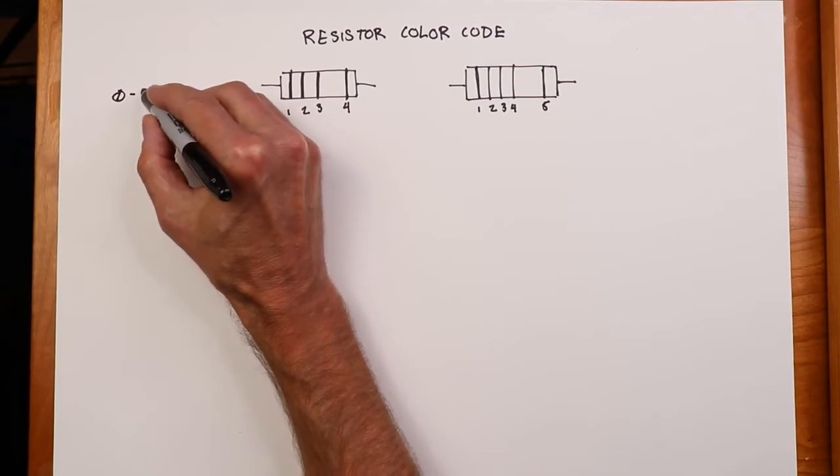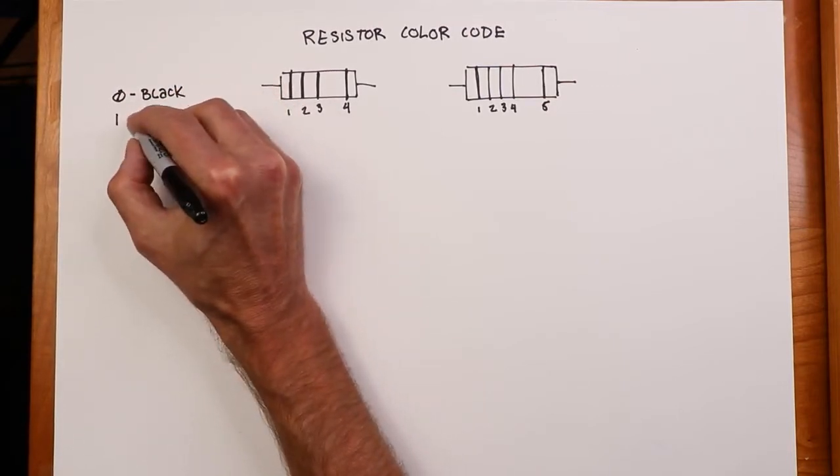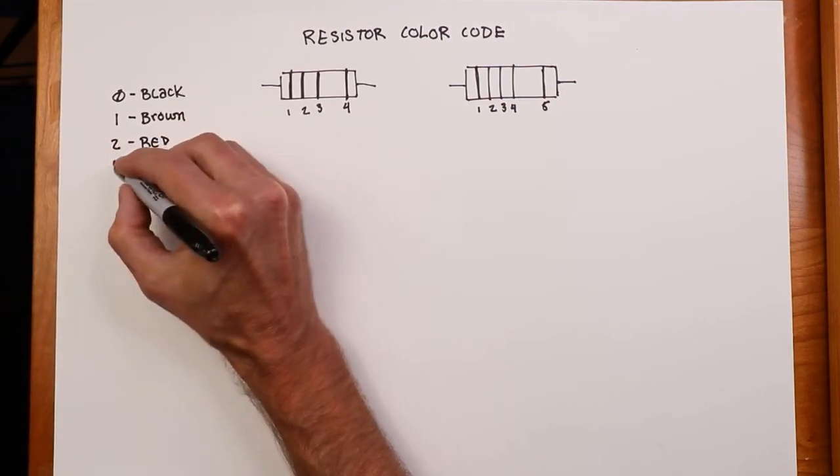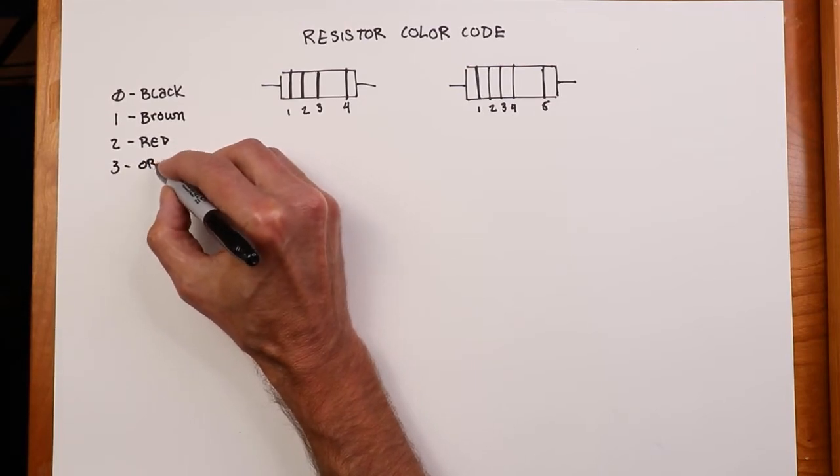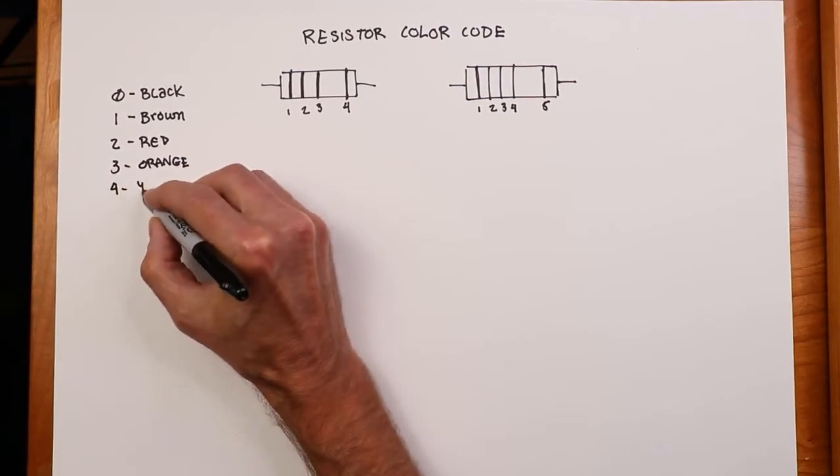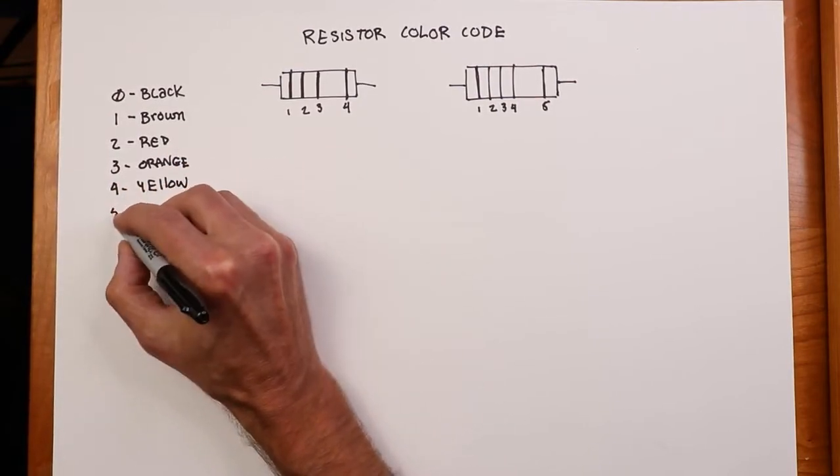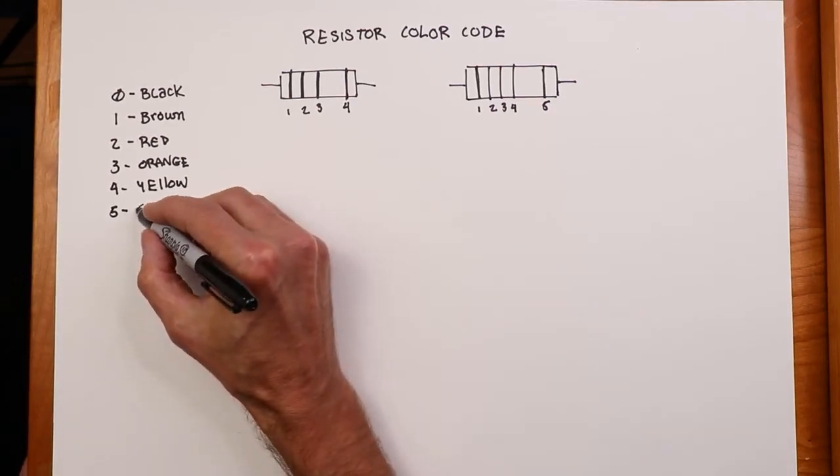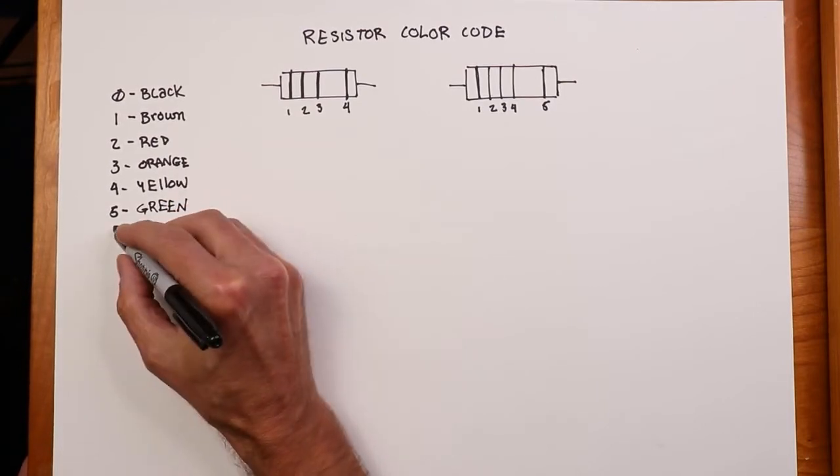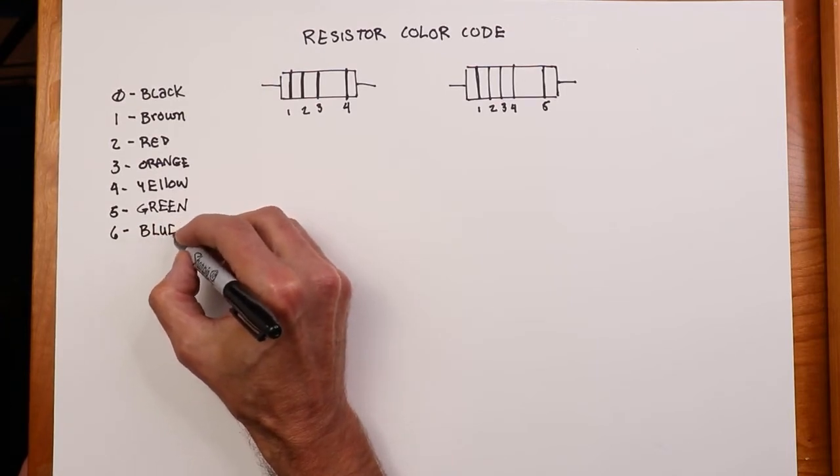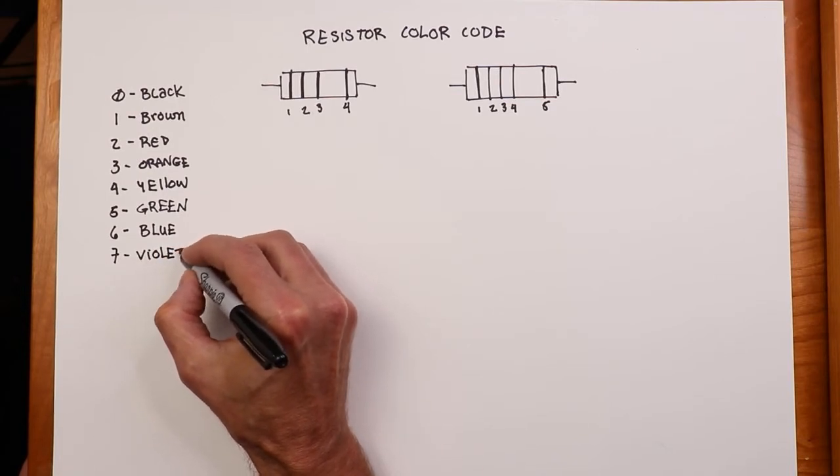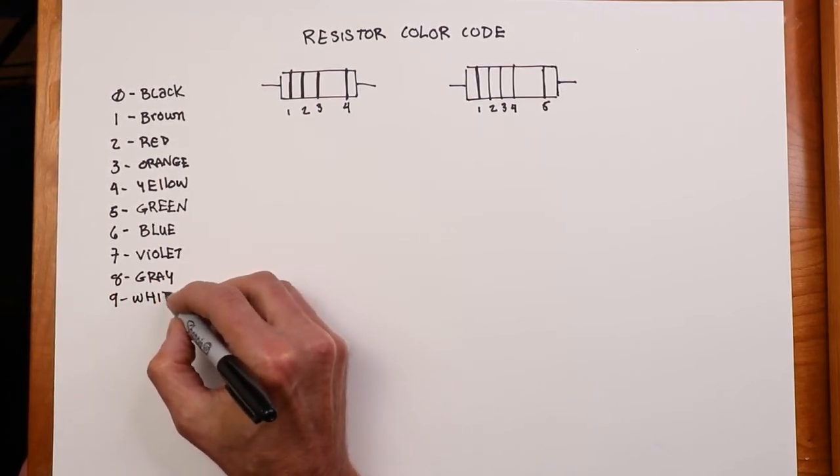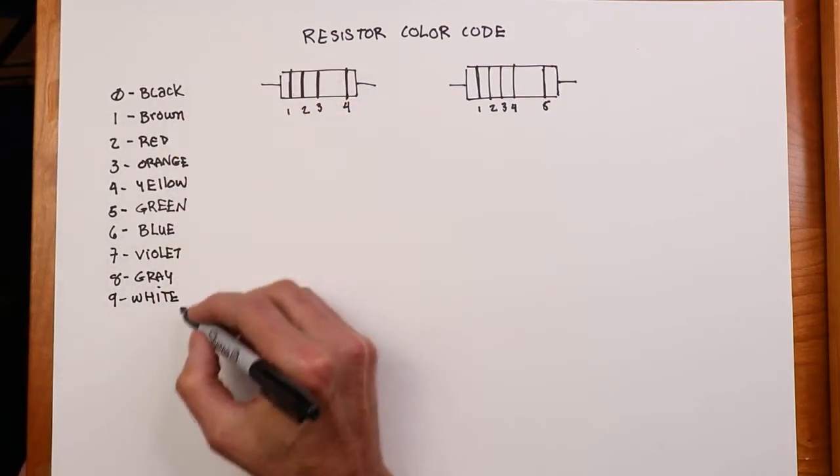So we need to know what the colors represent numerically. 0 is black, and we just kind of follow the rainbow here. Well, except for the black and brown. That's not really part of the rainbow unless it's night. Don't see a lot of rainbows at night though, because you do need light. Okay, so other than these extremes, black, brown, and gray and white, it's essentially a rainbow here.